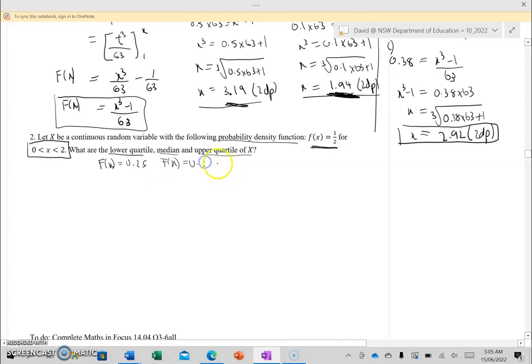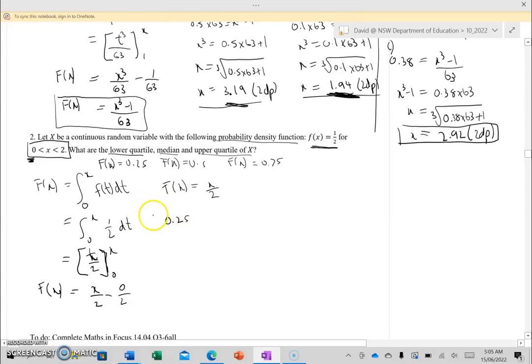Before we do that, we need to work out capital F of X, which is the integral from the lower limit—and the lower limit in this question is 0—to X of f(t) dt. So 0 to X of a half dt. Integrating that will be t/2, and then limits from 0 to X—that'll be X/2 minus 0/2, so my CDF is simply X/2. Substituting in 0.25 for f(x), so this will be the lower quartile, I'll call that Q1. Q1 will be the X value when f(x) is 0.25, so X/2 times by 2, we get X is 0.5, so that's my Q1.